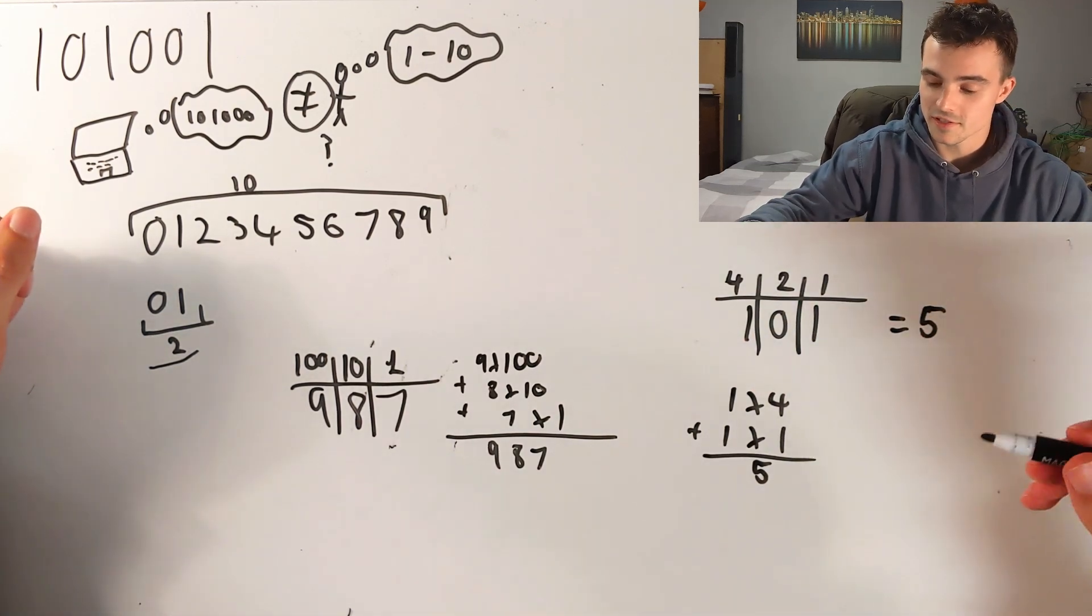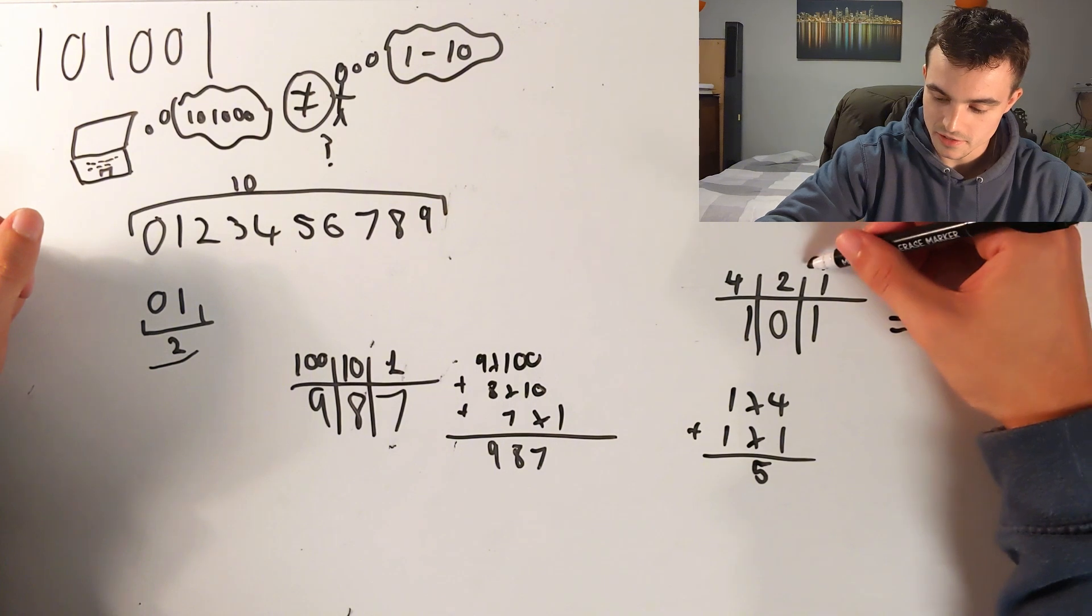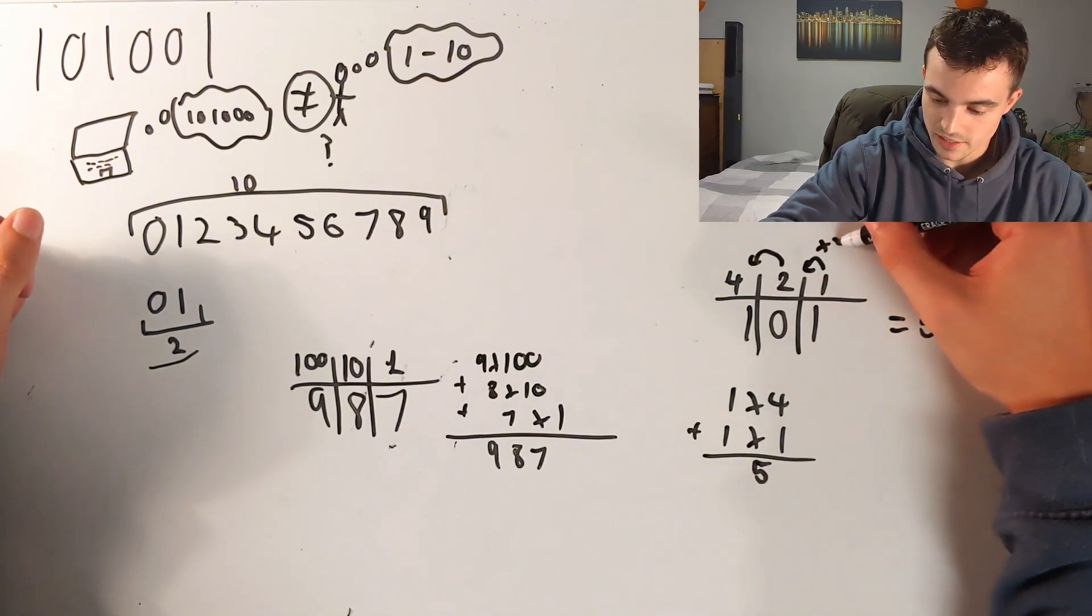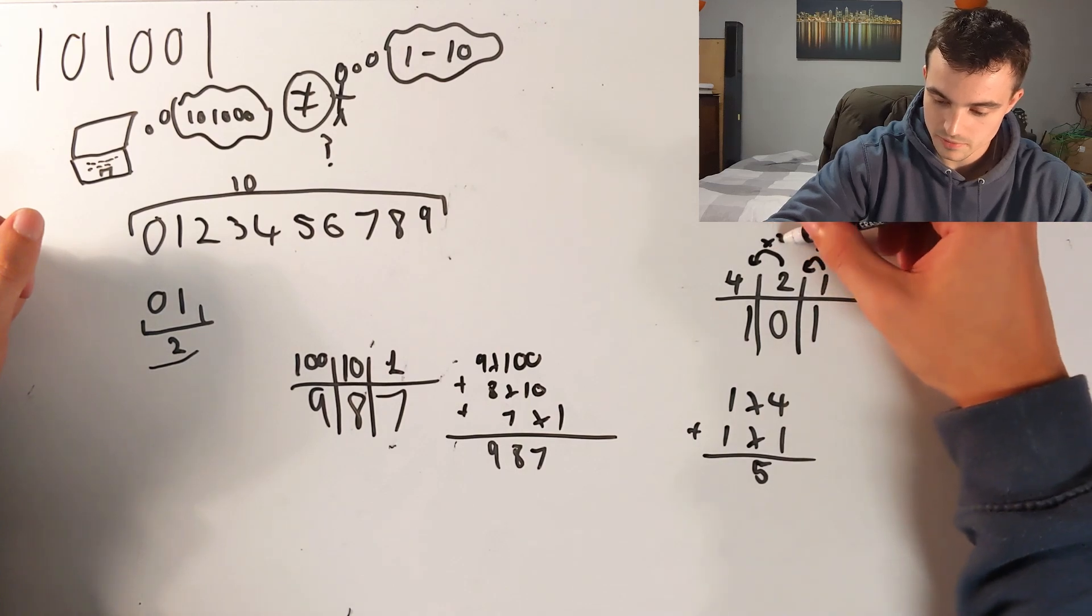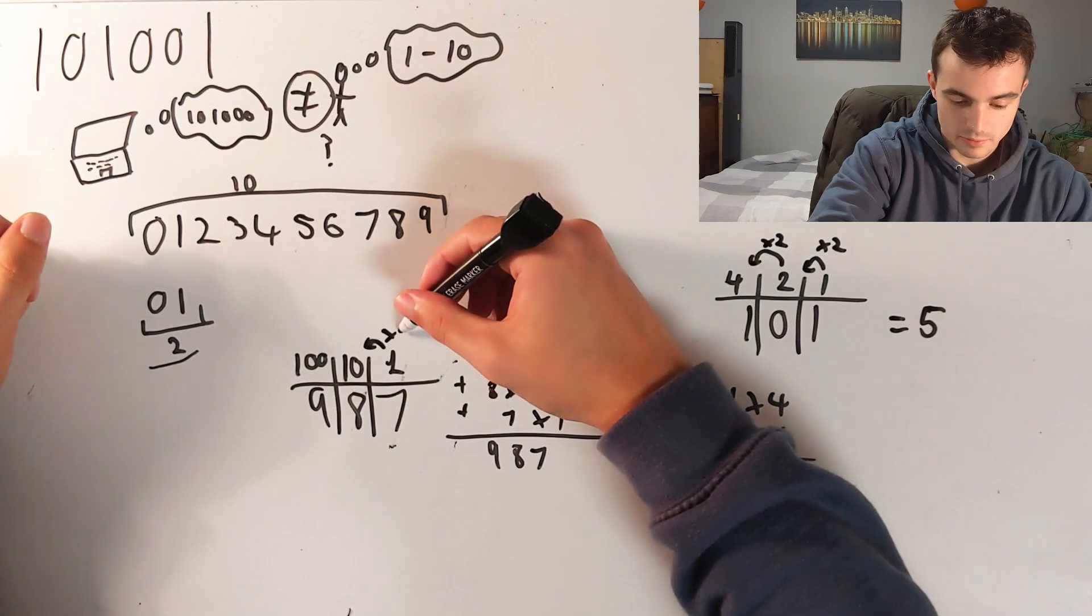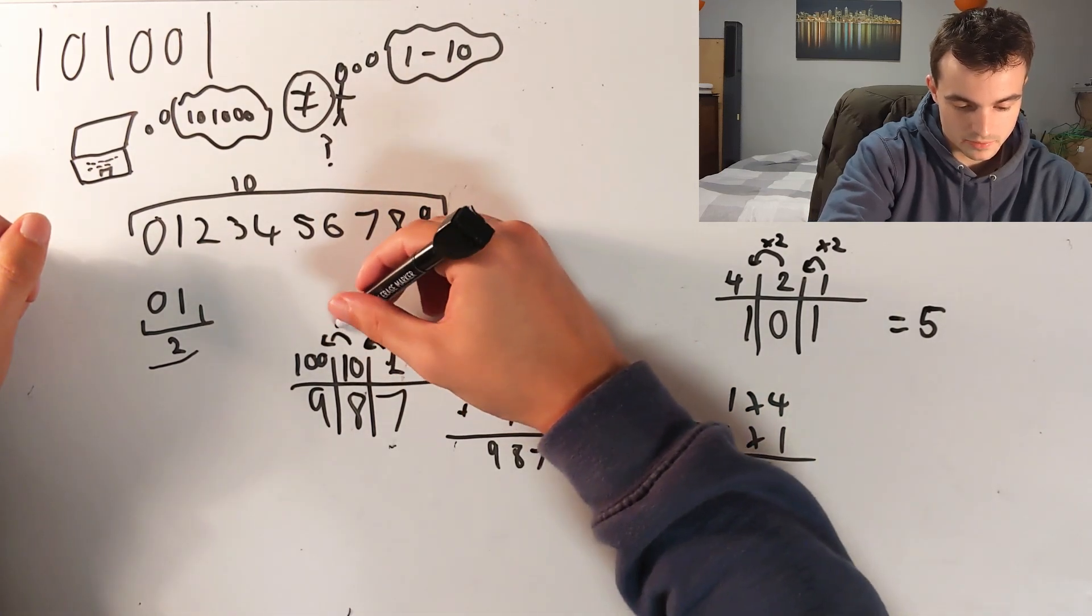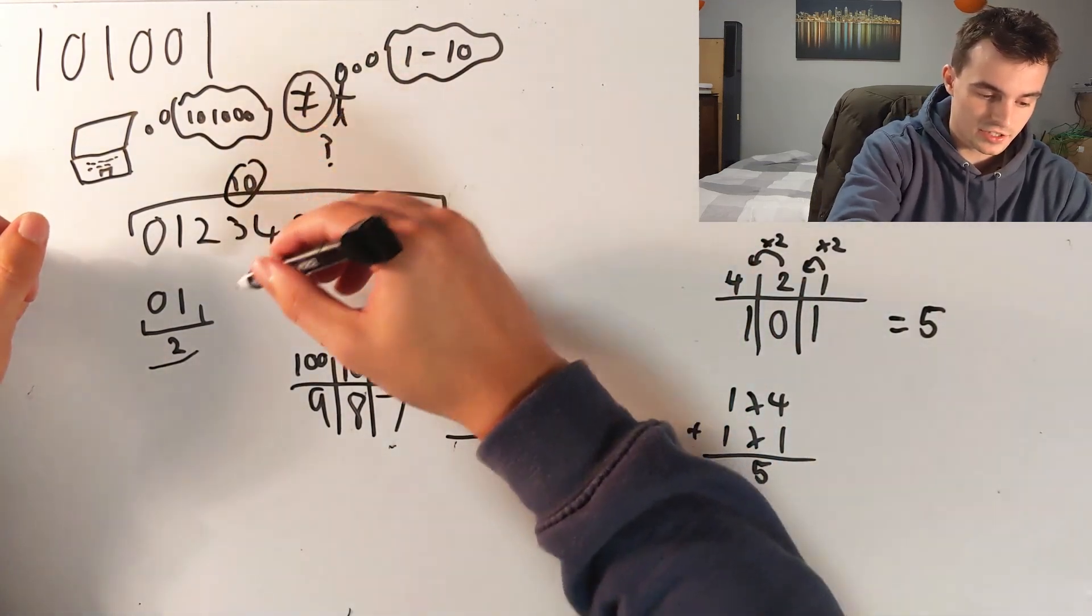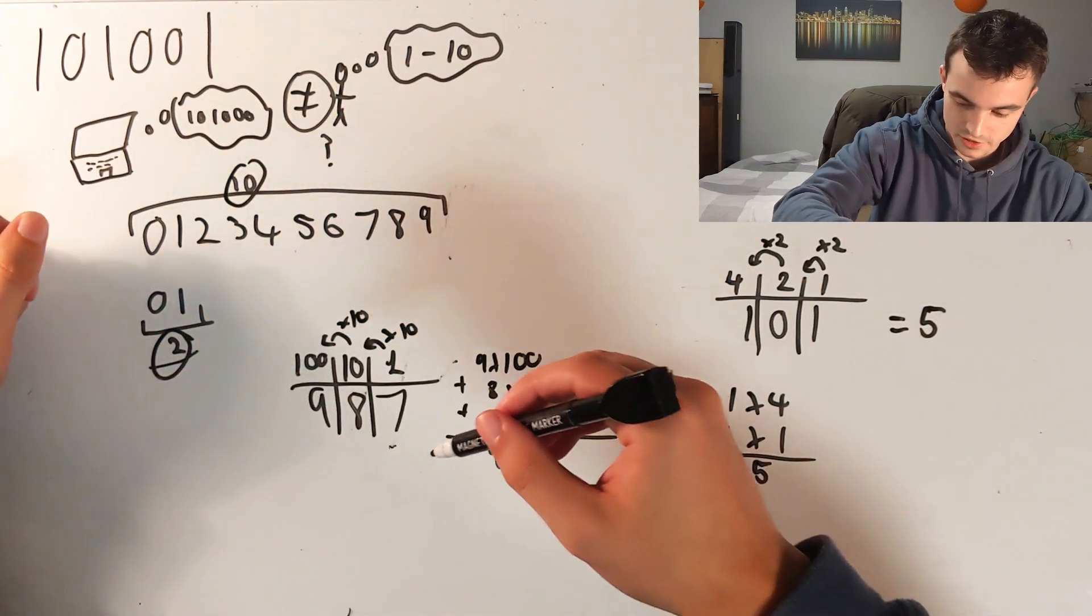What you can see is that these are times by two each time, and these are times by ten each time. And this is because we have ten digits and we have two digits.